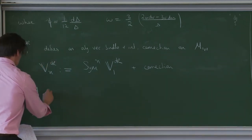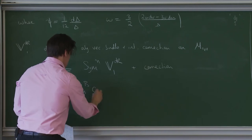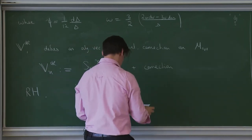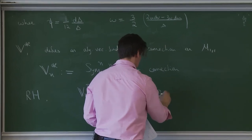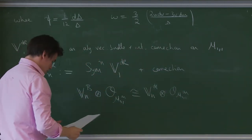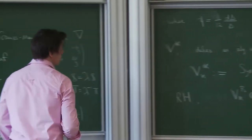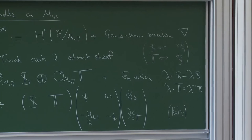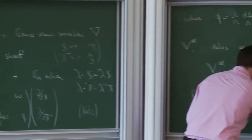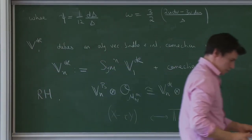The Riemann-Hilbert correspondence gives an isomorphism between the Betty local system and this algebraic vector bundle: Vn-Betty tensor O on M11 is isomorphic to Vn-de-Rham. Briefly, T corresponds to dx over y; if you integrate dx over y along A and B you get 1 and tau, and this corresponds — up to some possible power of 2 pi i — to x minus tau y. This is all very classical.